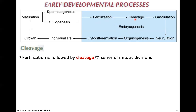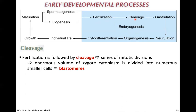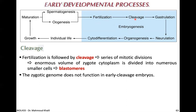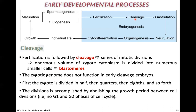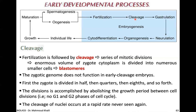Cleavage is a series of mitotic divisions in which the enormous volume of zygote cytoplasm is divided into numerous smaller cells called blastomeres. The zygotic genome doesn't function in early cleavage embryos. The zygote divides into half, then quarters, then eighths, and so on. There is no G1 or G2 phase in the cell cycle during cleavage — only S and M — so blastomeres get smaller and smaller with each successive division. For example, a Drosophila zygote can divide into 50,000 cells in just two hours.